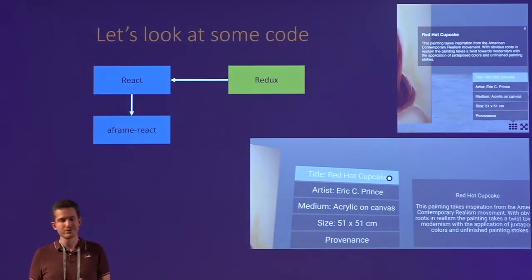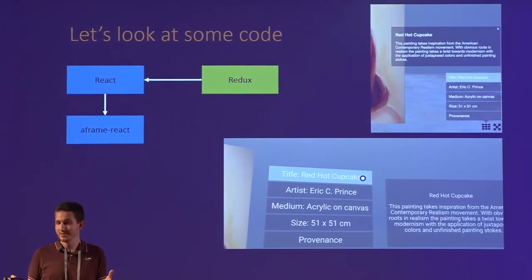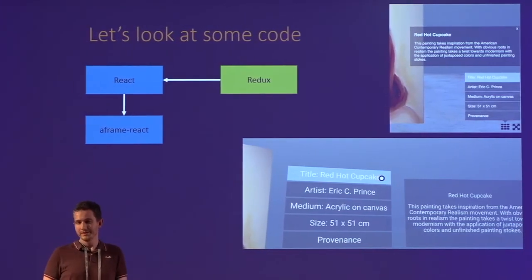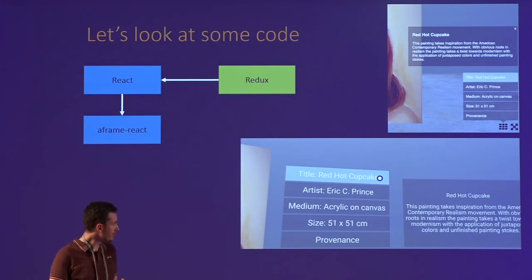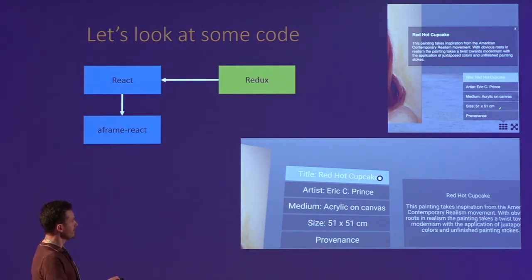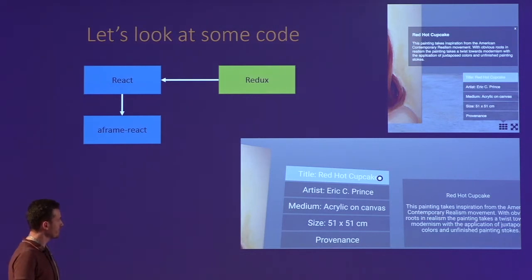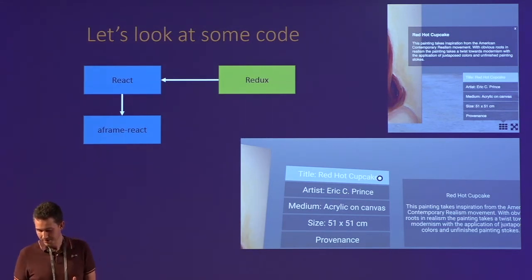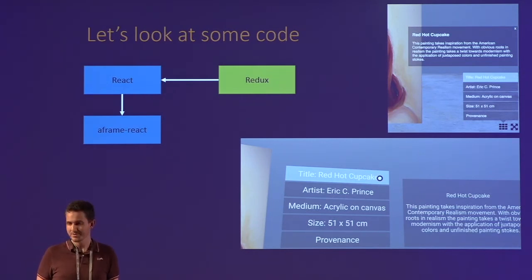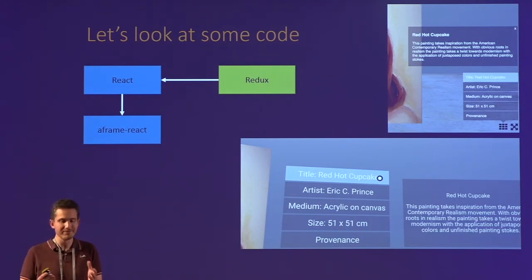Let's look at some code. The use case I want to show today is from our product. It shows a 3D model and can go into VR or into AR. When you're in flat 2D mode, we have a menu that we render with ordinary HTML. When you go into VR, you get a very similar menu with the same items. All that data and the state of the menu is synced up via the same Redux store. That's a really cool attribute of WebVR — using it with React and Redux you can sync up these things and really reuse a lot of stuff.